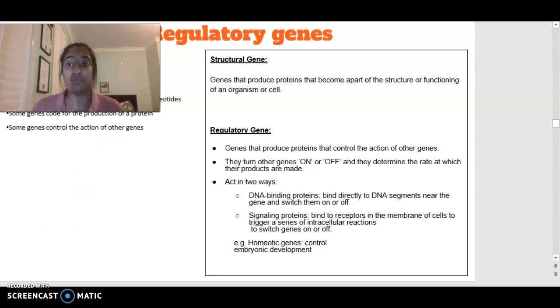A regulatory gene is a gene that produces proteins that control the action of other genes. They are what we call on and off switches, and they determine the rate at which products are made, basically stopping or starting transcription from occurring. They act in two ways. The first way is DNA binding proteins that bind directly to particular DNA segments near a particular gene and can switch them on or off. Or we have signaling proteins that bind to particular receptors on the membrane of the cell and trigger a series of events intracellularly to switch particular genes on and off. Some examples are homeotic genes which control embryonic development.